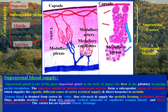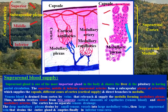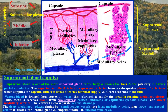Thus, the medulla receives blood from two sources: cortical sinusoids or capillaries (venous blood) and direct medullary arteries. The cortex has no separate venous drainage. The deep medullary plexus drains by small venous vessels into the large medullary veins, then into the large suprarenal vein that drains the entire gland and finally empties into the inferior vena cava.